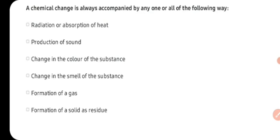A chemical change is always accompanied by any one or all of the following. Jab bhi kabhi, kahin par bhi chemical change hoti hai, to kuch aapko effects dekhne ko milte hai — yeh sari cheezein chemical change ke characteristic features hoti hai. Sabse pehla — radiation or absorption of heat. Chemical changes mein ya to heat ko absorb kiya jaata hai, ya phir heat usmein se liberate hoti hai, nikalta hai. Second — production of sound. Sound ka bhi production ho sakta hai agar chemical change ho raha hai, to jaisi ki explosion of fire cracker.